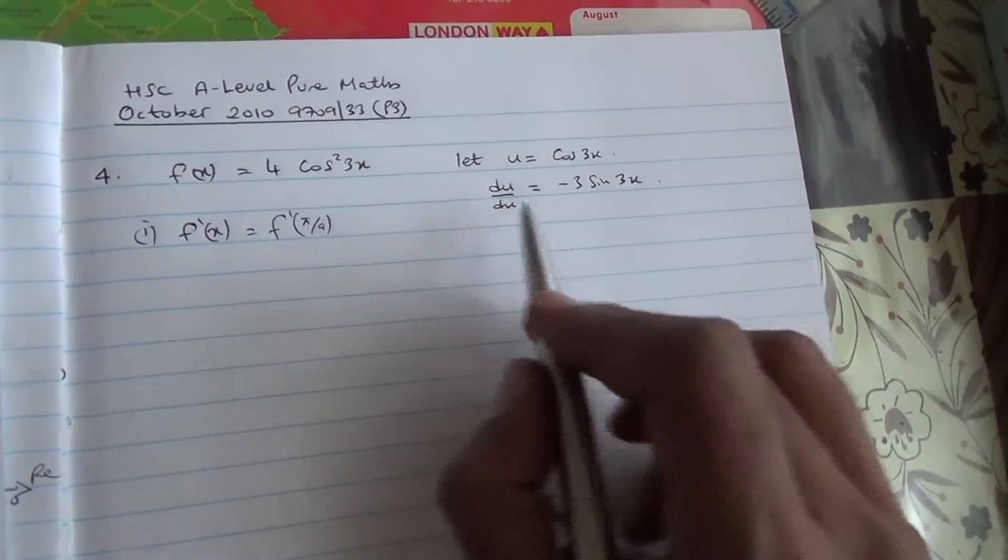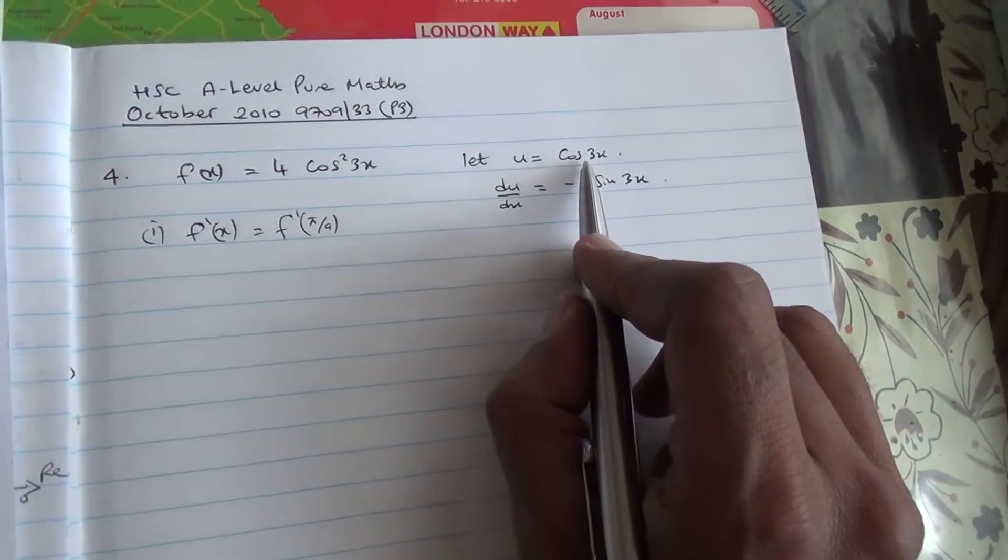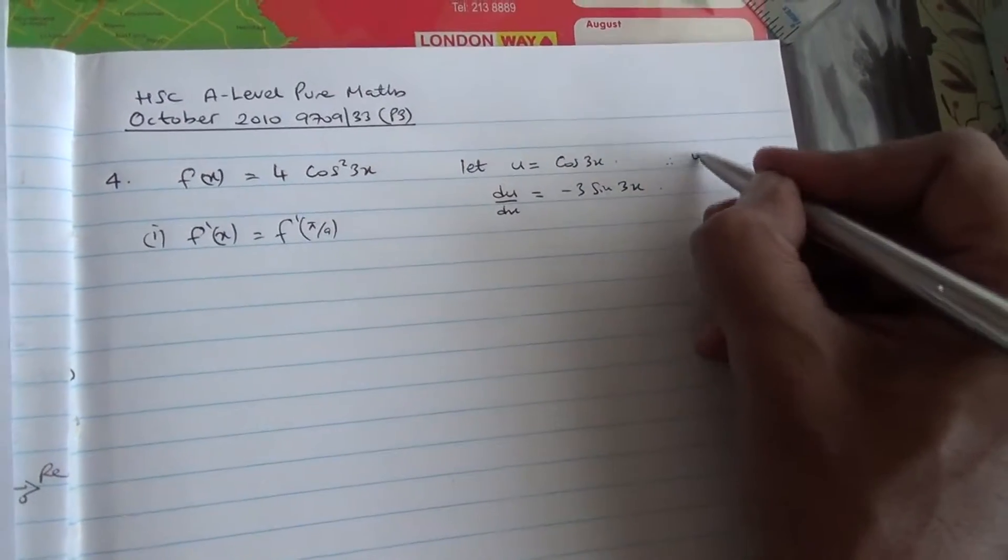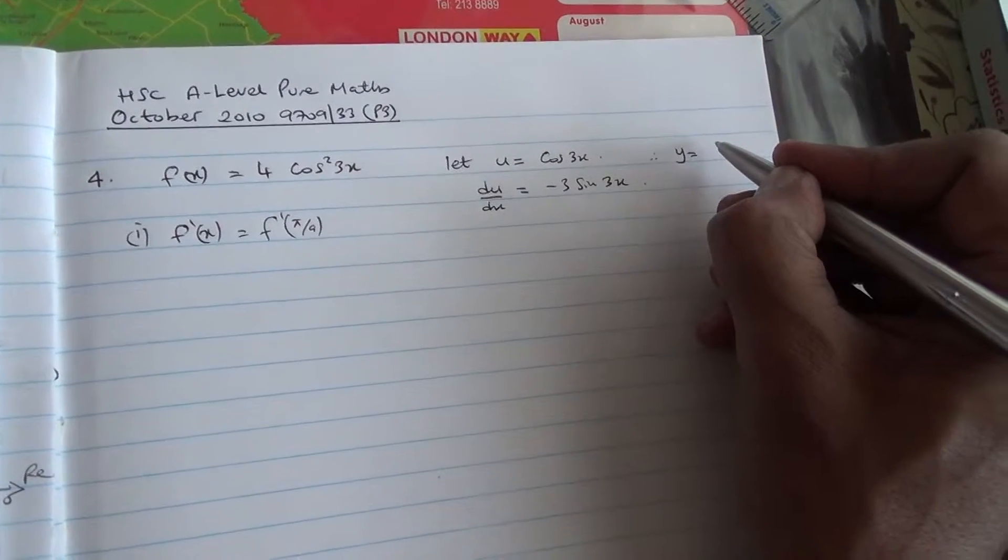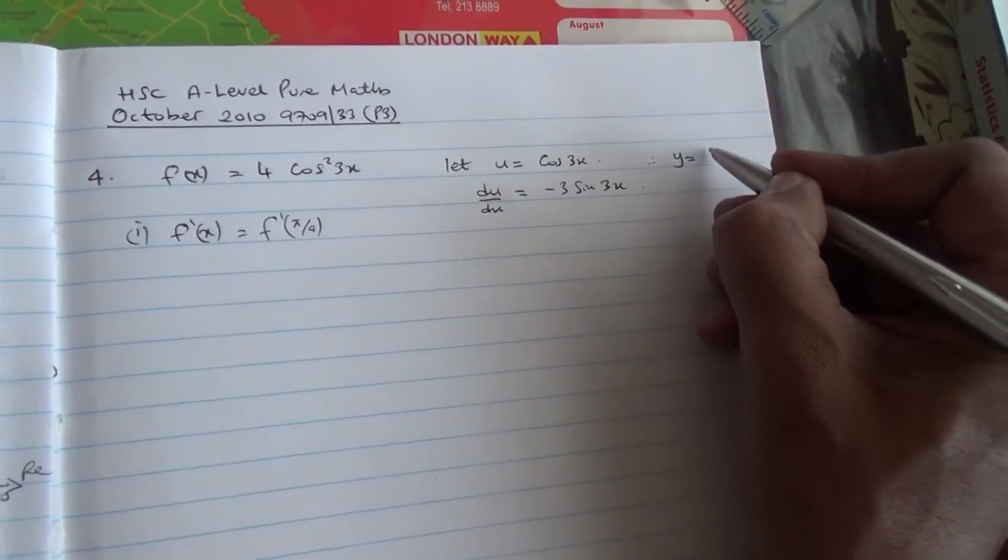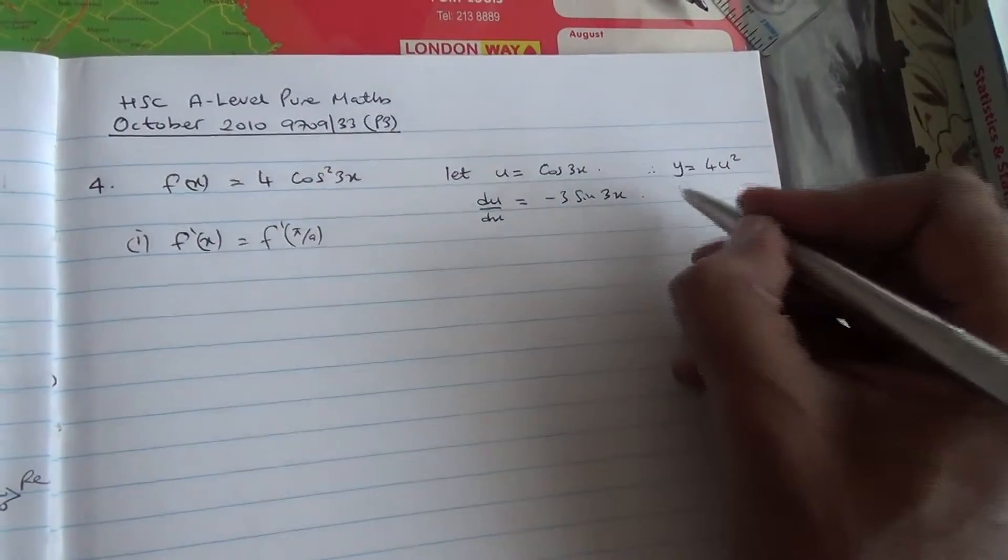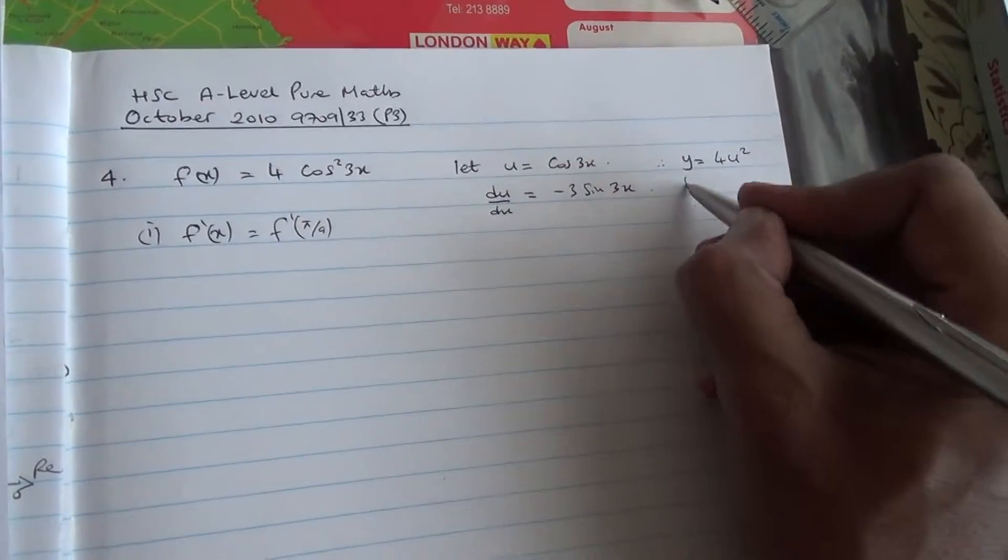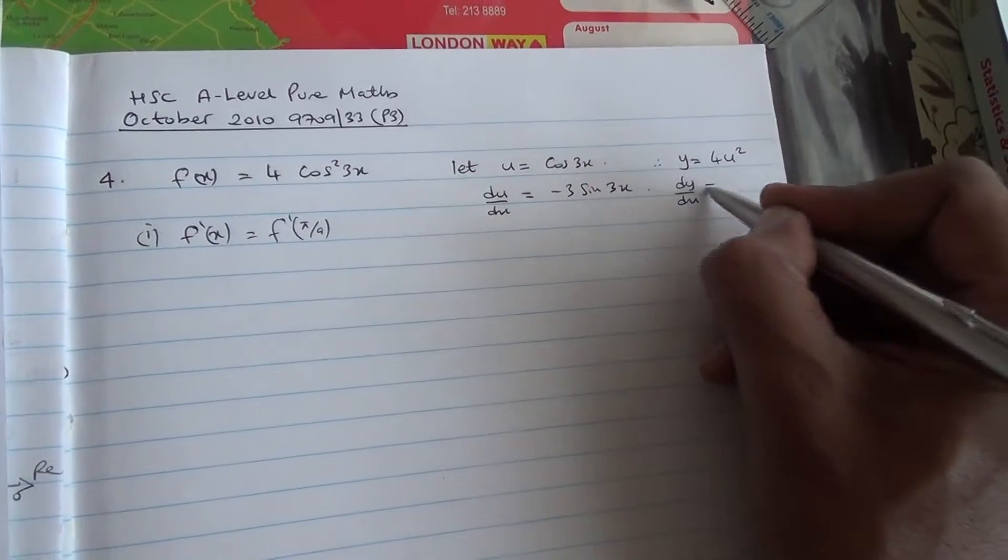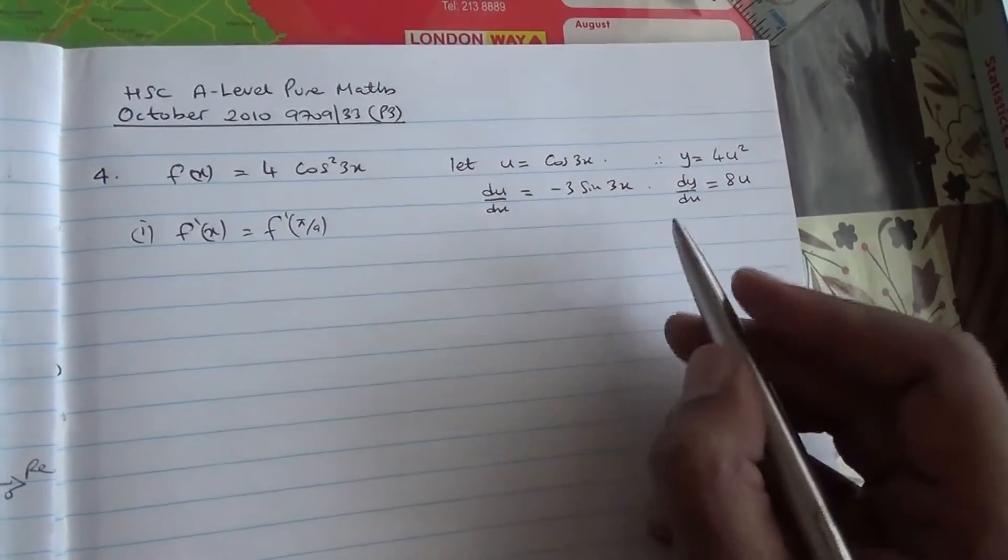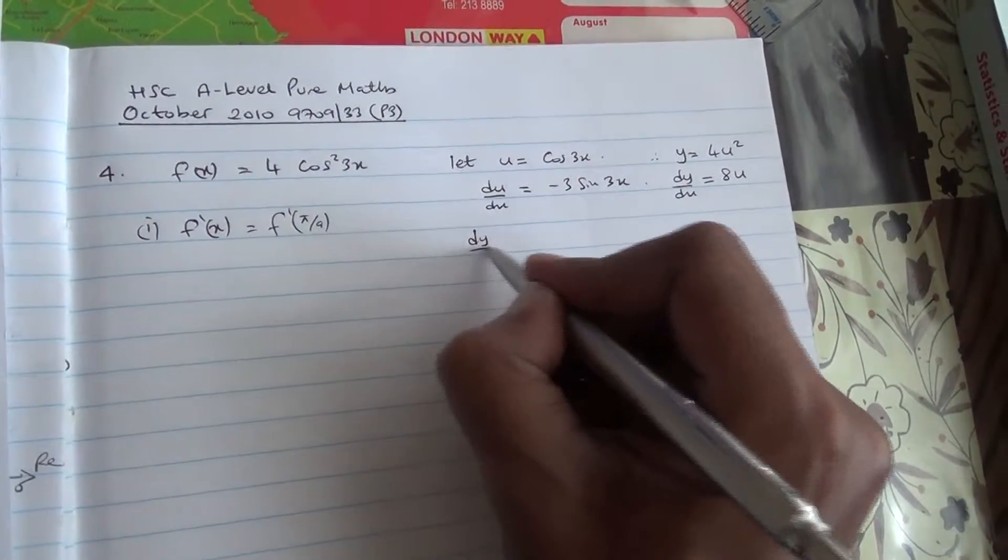Now, if u equals cos 3x, what it means is that this f(x) here is y. Therefore y is going to be 4u squared, because there's a square here. So if we differentiate y, we're going to get dy/du is equal to 8u. So what is dy/dx, which is f dash x?